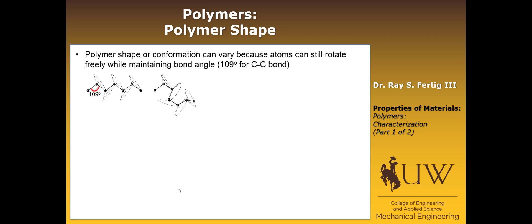Let's talk about polymer shape. Different from metals or other materials we've looked at, the polymer shape can vary because atoms can rotate freely while still maintaining their bond angle. 109 degrees is the angle for a carbon-carbon bond. We have these carbon-carbon bonds that sit at 109 degrees, but we can spin around that cone and still maintain that angle. So there's a lot of degrees of freedom in the system.